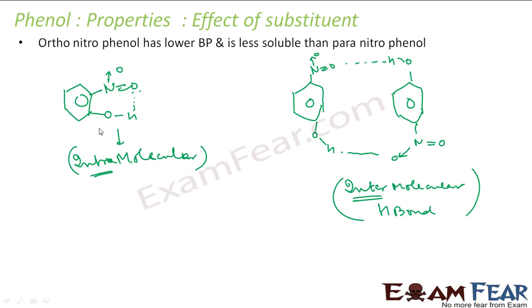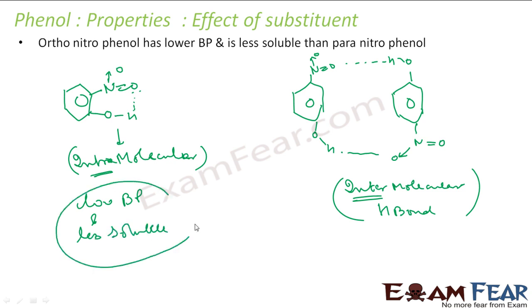So orthonitrophenol has intramolecular hydrogen bonding, meaning it does not form intermolecular hydrogen bonds. Because of this, it has low boiling point and is less soluble. These intramolecular bonds are internal — the molecule is interacting with itself only — so this is a small, self-contained unit and is not bonded strongly with its neighbors.